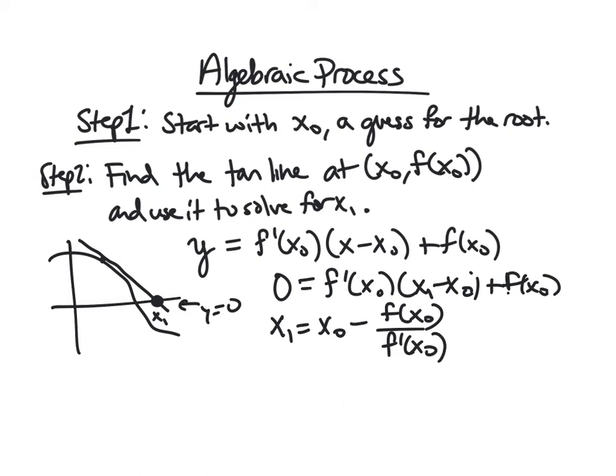And then we can continue this process. Because we just do the same thing again, except for x1 takes the place of x0, and then x2 takes the place of x1. And so you get x2 is then x1 minus f of x1, or yeah, minus f of x1 over f prime of x1, and so on.